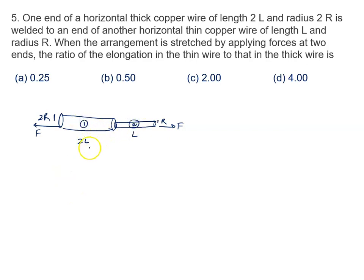We have to calculate the ratio of the elongation in thin wire. That is, we have to calculate delta X1 upon delta X. The ratio of the elongation thin wire. Sorry, we have to calculate delta X2 upon delta X1. That we have to calculate.